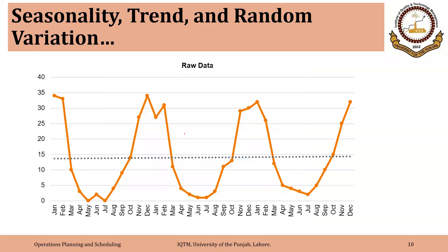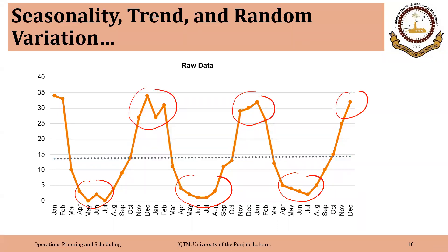This figure also illustrates seasonal demand — this product has fairly low demand during summer from April to September, and very high demand during winter. You can also notice random variations from period to period. This figure shows a clear seasonal pattern of demand.